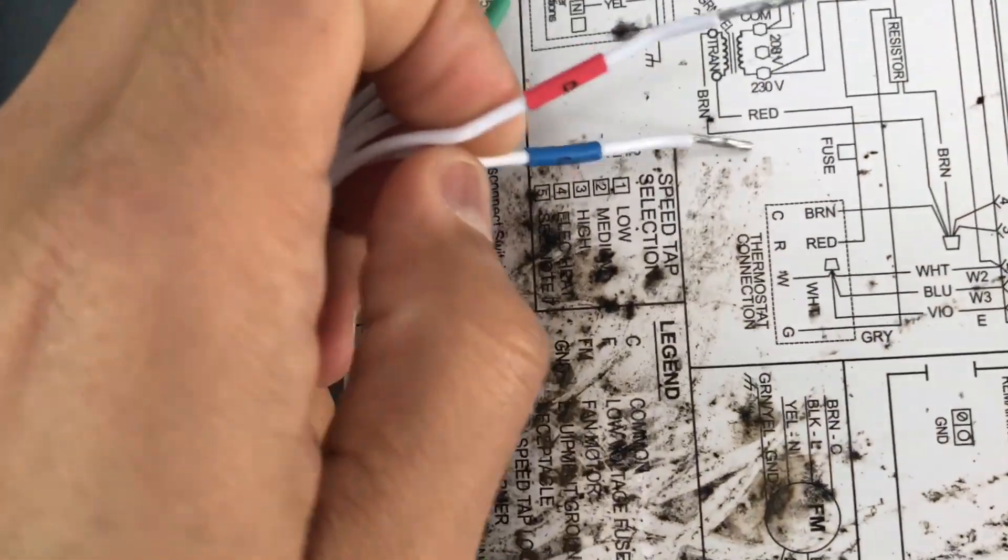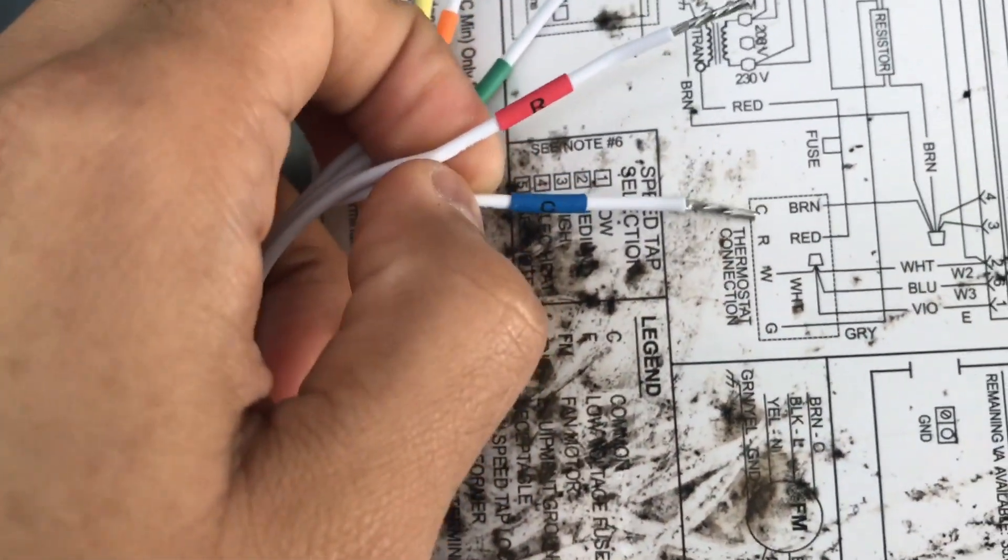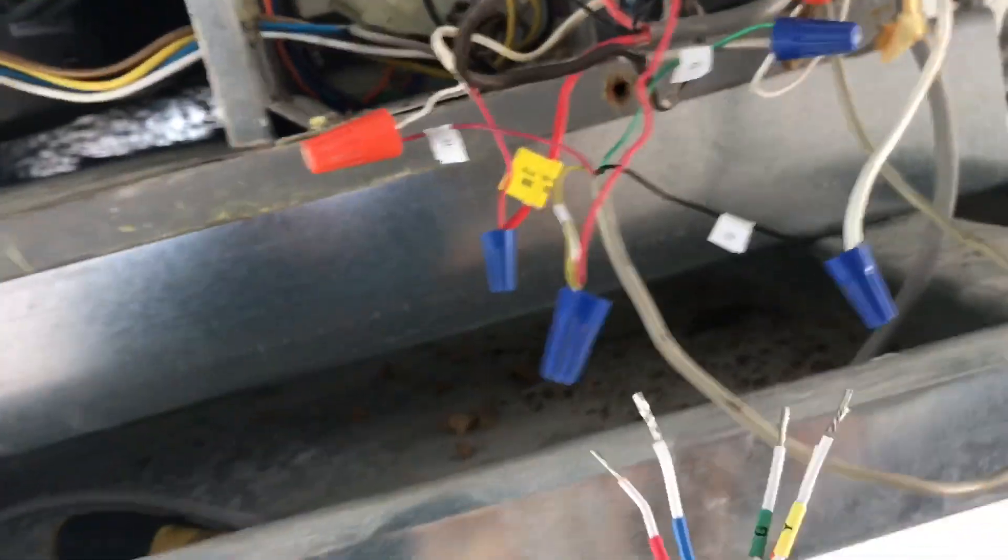The trick is, as we can see on the schematic, the blue wire or C, it's the brown. So we're going to put this blue one into the brown, and that's it. And you were able to connect everything else here.